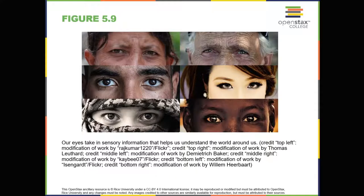The visual system constructs a mental representation of the world around us. This contributes to our ability to successfully navigate through physical space and interact with important individuals and objects in our environments. This section will provide an overview of the basic anatomy and function of the visual system. In addition, we'll explore our ability to perceive color and depth.